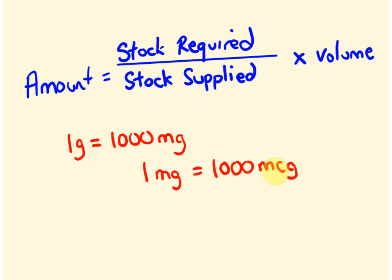We're also going to be dealing with metric conversions. The major ones are: one gram equals a thousand milligrams, one litre equals a thousand millilitres, and one milligram equals a thousand micrograms. Micrograms, by the way, can also be written with the little mu symbol — that also means micro.